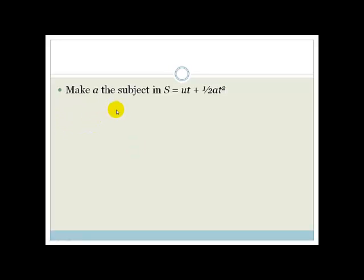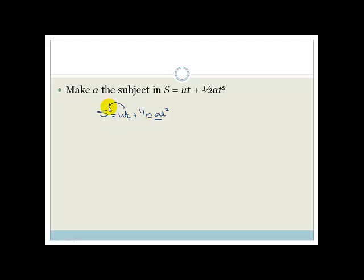Let's try a more complicated version. This time we've got S = UT + ½AT² and again we want A by itself. This looks scary but it's not — we're going to take it in nice little baby steps and you'll see it's actually quite easy. First things first: we want to get the term that has the A all by itself, so we move the UT term to the other side. That gives us S − UT = ½AT².